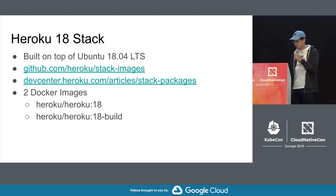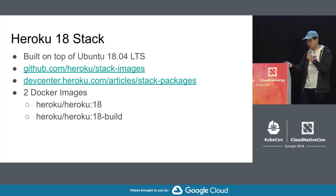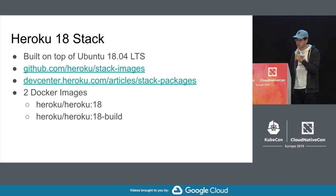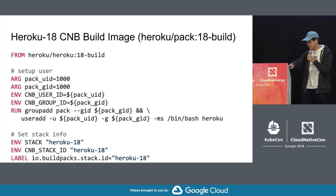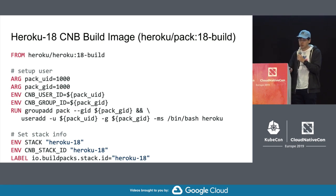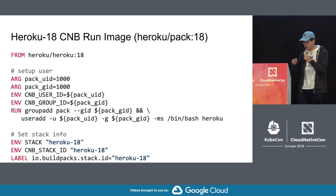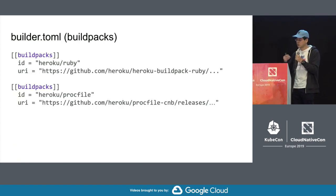We at Heroku provide two Docker images anyone can fetch and use. In our Build image, we have development headers that we don't make available in our Run image since they aren't needed at runtime, but you might need them for native extensions. To construct those images referenced in builder.toml, we inherit from the Heroku build image, create a user for the build process, and set stack information and labels so the Buildpack knows what stack it's running on. The Run image looks similar, but inherits from the Run image side of the Heroku-18 stack.